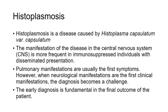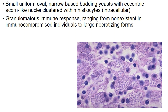Coming to histoplasmosis: caused by Histoplasma capsulatum. CNS manifestation is most frequently seen in immunosuppressed individuals with disseminated presentation. Pulmonary manifestations are usually the first symptoms; however, when neurological manifestations appear first, diagnosis becomes a challenge and early diagnosis is fundamental to patient outcome. Histoplasma are small, uniform, oval, narrow-based budding yeasts with a characteristic eccentric acorn-like nuclei clustered within a histiocyte — it is an intracellular organism. There may also be a granulomatous immune response in the surrounding brain parenchyma.